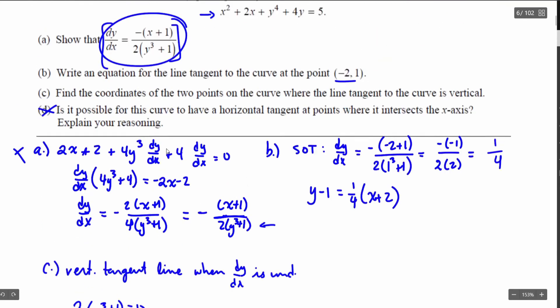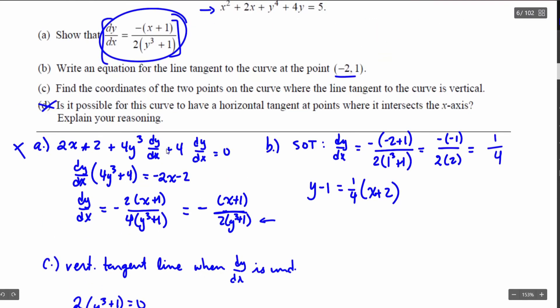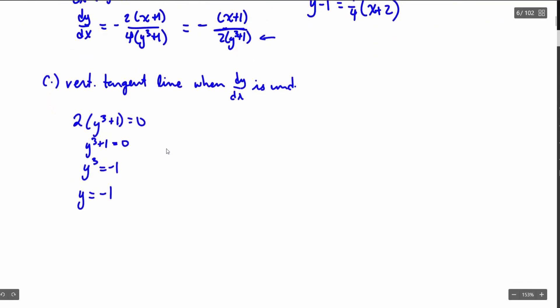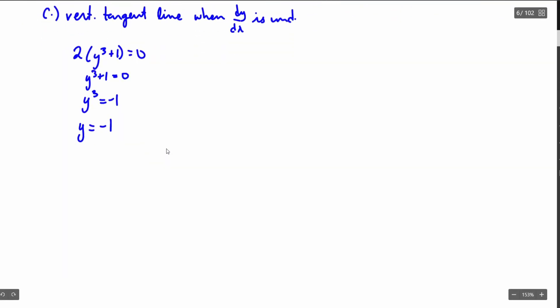But I'm not done because it said, let's go up and look at this problem real quick, it said find the coordinates. Did I find a coordinate? No, I just found a single y value. I also know that there's going to be two points on the curve and again I just found a single y value. So I'm going to get the other two points.